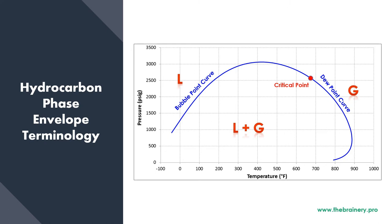We already discussed what the bubble point curve and dew point curve are. The critical point is where the bubble point curve meets the dew point curve. We also see a straight line drawn touching the tip of the phase envelope, which is called Cricondenbar. By definition, the Cricondenbar is the highest pressure at which we could have liquid and gas flow coexisting in a system.